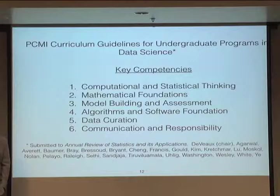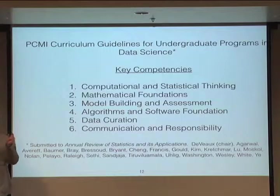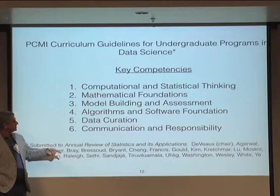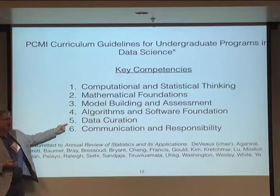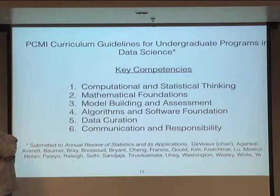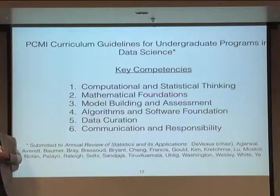We identified six key areas that undergraduates should be made aware of to call themselves data scientists: computational and statistical thinking; mathematical foundations; model building, which includes both prediction and inference; data curation — where does data come from, how do we keep it, store it, give it to others, remember what it's about; and communication and responsibility. This last one is really interesting — it includes ethics of data privacy, data security, and also scientific reproducibility: how do I reproduce my analysis so that other people know where the data came from and what I did.